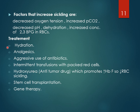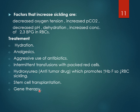Treatment includes hydration with fluids, use of painkillers and analgesics, aggressive use of antibiotics — including prophylactic use — to prevent repeated infections, and intermittent transfusion with packed red cells. The drug hydroxyurea, an anti-tumor drug, promotes hemoglobin F production, which lacks the mutant beta chains, thereby reducing hemoglobin S and minimizing symptoms. Stem cell transplantation is beneficial, and gene therapy can also be useful.